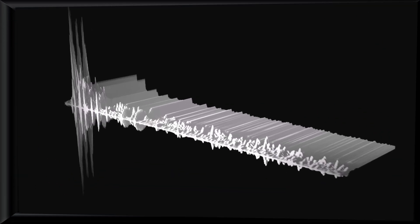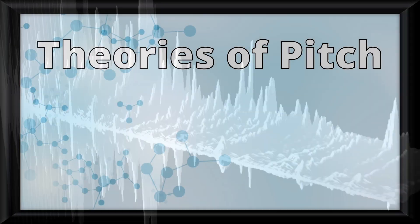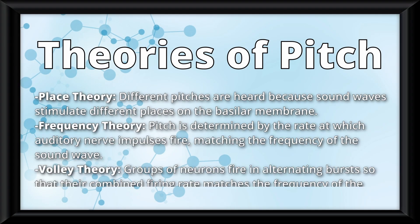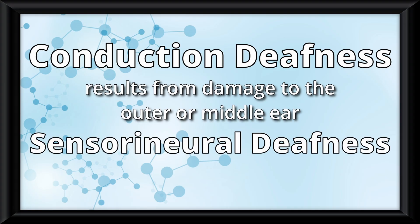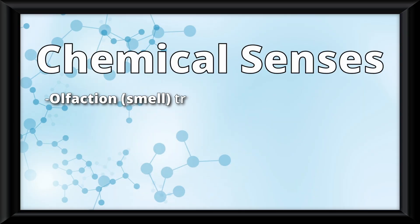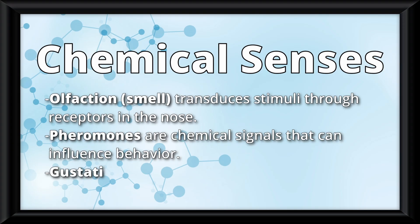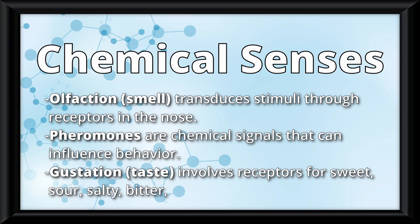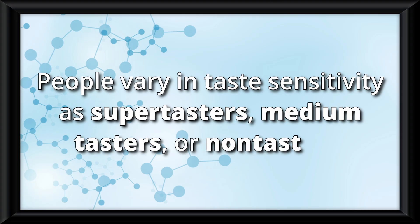Next, hearing. Sound is created by vibrations of air molecules, measured as wavelength for pitch and amplitude for loudness. Theories of pitch include place theory, frequency theory, and volley theory. We also use sound localization to detect where sounds come from. Conduction deafness results from damage to the outer or middle ear, while sensorineural deafness comes from damage to the inner ear or auditory nerve. For the chemical senses, olfaction (smell) transduces stimuli through receptors in the nose, but unlike other senses, it does not route through the thalamus first. Pheromones are chemical signals that can influence behavior. Gustation (taste) involves receptors for sweet, sour, salty, bitter, umami, and oleogustus. People vary in taste sensitivity as super-tasters, medium-tasters, or non-tasters.